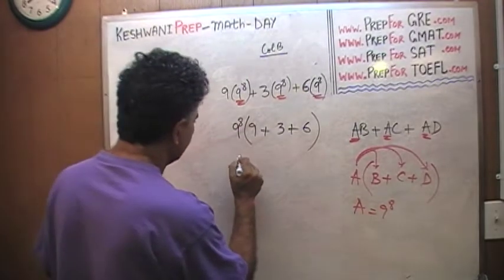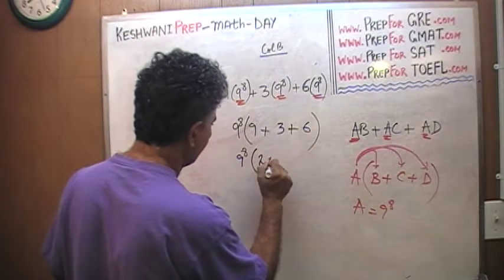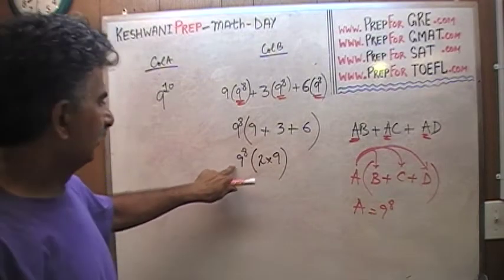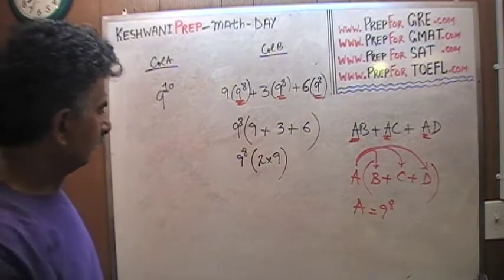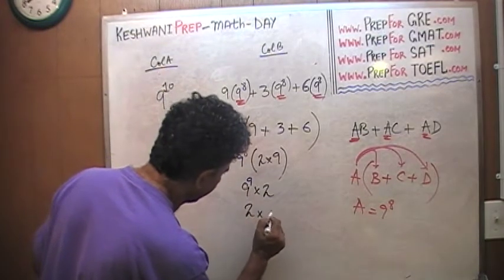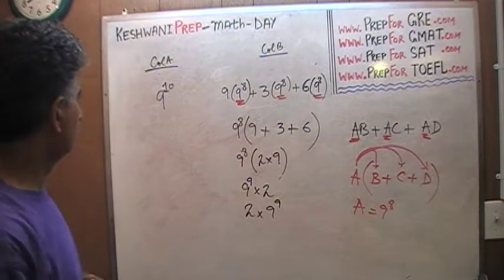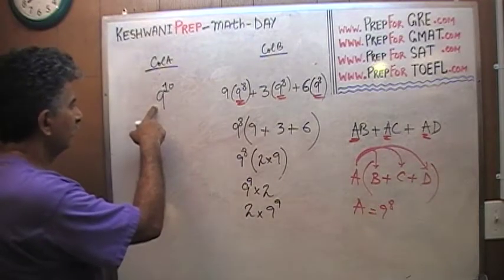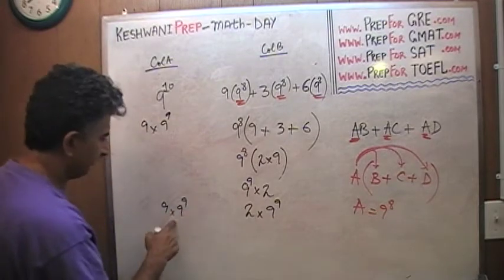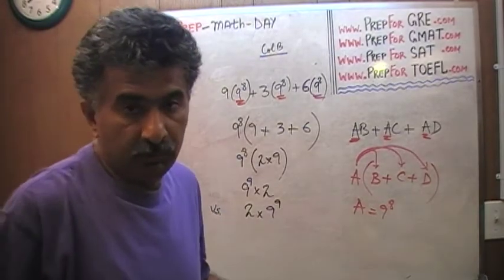So we have 9 raised to 8 times (9 plus 3 plus 6), which is 9 raised to 8 times 18. Notice I write 18 as 2 times 9, because we can incorporate that 9: so we get 2 times 9 raised to 9. That is what column B boils down to: 2 times 9 raised to 9. And column A — 9 raised to 10 — can be written as 9 times 9 raised to 9. So we are comparing 9 times 9 raised to 9 versus 2 times 9 raised to 9.